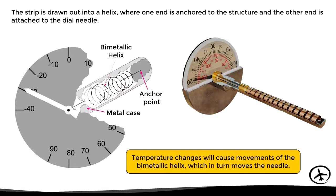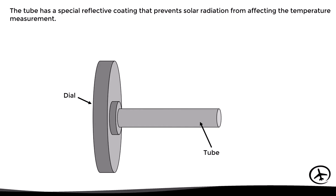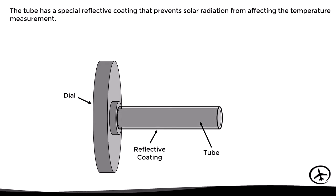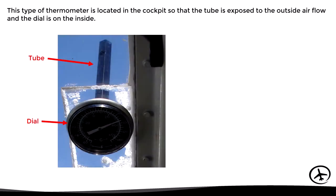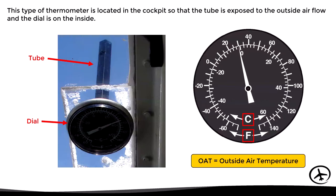Since the tube with the bimetallic helix must be exposed to the free airflow, it will also be exposed to sunlight. Therefore, the tube has a special reflective coating that prevents solar radiation from affecting the temperature measurement. This type of thermometer is located in the cockpit so that the tube is exposed to the outside airflow and the dial is on the inside — that's why it is also known as the direct reading thermometer. Normally the dial includes both Fahrenheit and Celsius scales, and the temperature indicated by this thermometer is known as the outside air temperature (OAT).